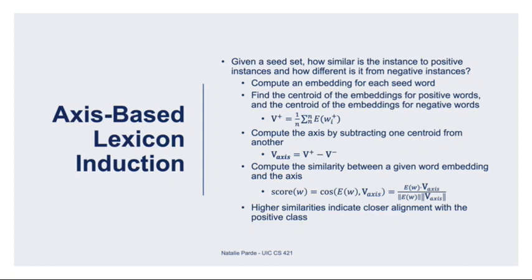Axis-based lexicon induction works by inducing where a new instance sits along the spectrum from positive to negative instances. You start with a labeled seed set and compute an embedding of some sort for each of those seed words. You then find the centroids of the positive and negative classes respectively — in a sentiment lexicon, these centroids would correspond to positive and negative sentiment. You subtract the negative centroid from the positive centroid to find the axis, and then for a new unlabeled word, you compute the similarity between that word's embedding and the axis using cosine similarity. You end up with a score, and higher scores mean that your new unlabeled word is more closely aligned with the positive sentiment class.